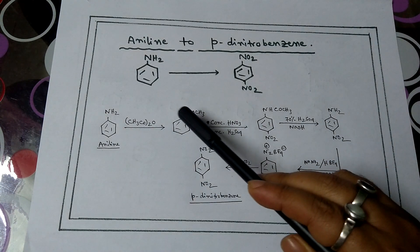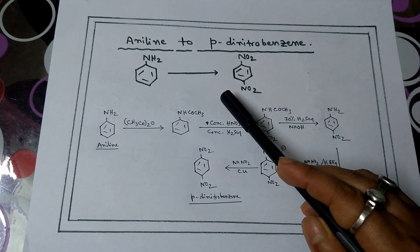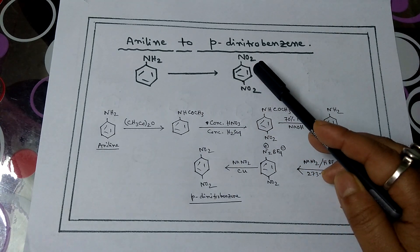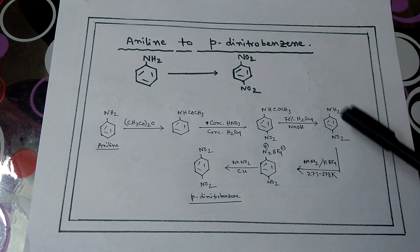This is the formula: aniline has a benzene ring with NH2, and paradinitrobenzene has a benzene ring with nitro groups at the para position.